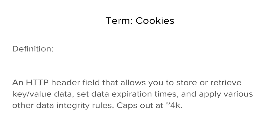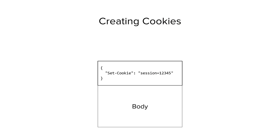Next up, let's talk about cookies — a fundamental web technology that I think are super cool. Cookies are really just an HTTP header field that allow you to store or retrieve key-value data. The only thing you really need to know is you can only store about 4 kilobytes of data inside a cookie. When a user logs into your website and you want to store a cookie, what you do as the web server is return a header called Set-Cookie. The value of that header is just key equals value. So I'm defining a cookie called 'session' whose value is 12345.